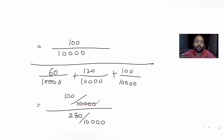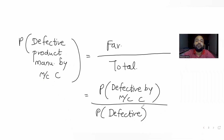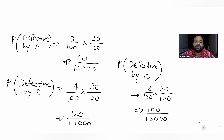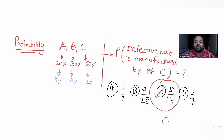The 10,000 cancels, leaving us with 100/280, which simplifies to 5/14. So the probability of getting a defective bolt from machine C, given that a defective bolt is picked, is 5/14 — and that matches option C.